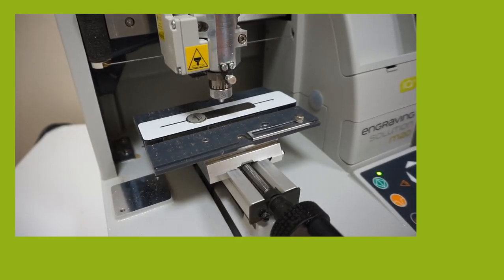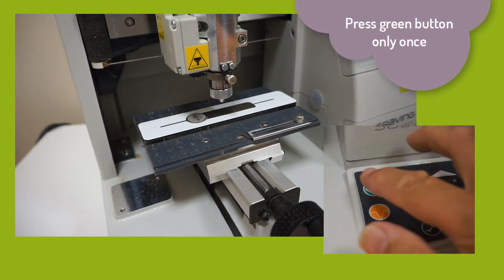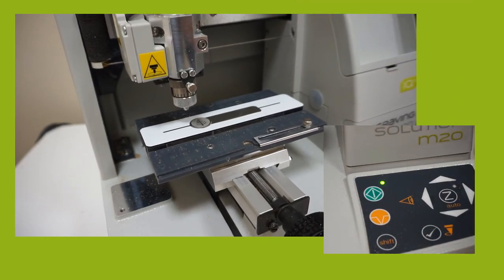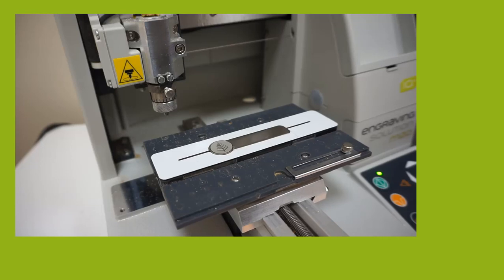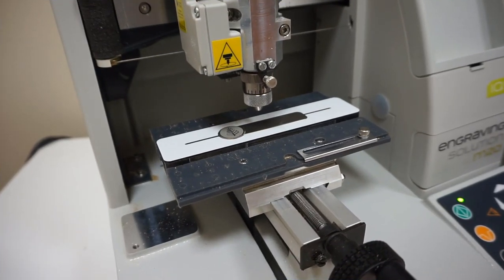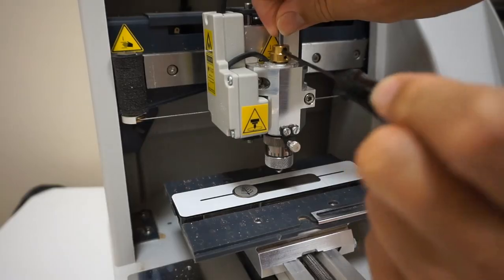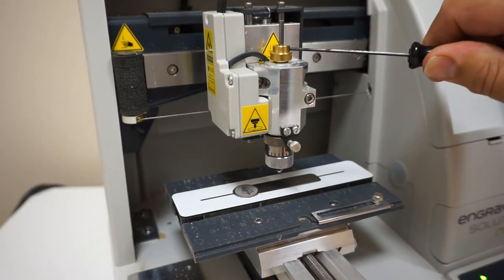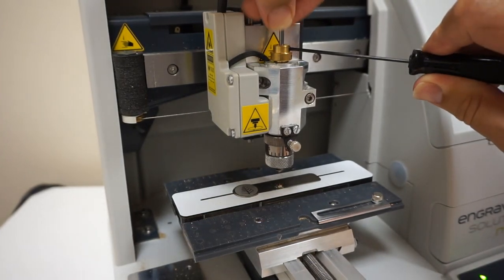For now we press the green button only once. This moves the cutting head to the point above where it will start engraving. We are now going to take out the cutting tool. Loosen the small allen screw and lift the cutting tool completely out.